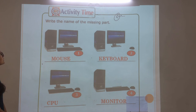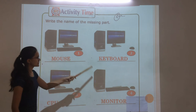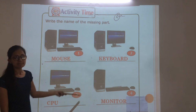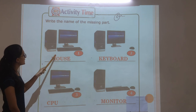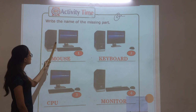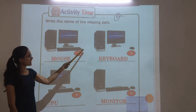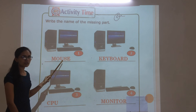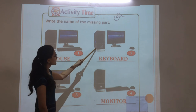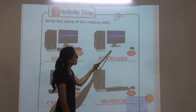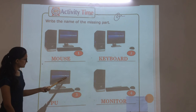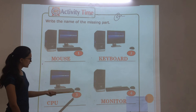Activity time — I will write the name of the missing part. You are given four pictures, each with one computer part missing. In the first picture, CPU, monitor, and keyboard are shown — the mouse is missing. In the second picture, the keyboard is missing. In the third picture, monitor, keyboard and mouse are shown — the CPU is missing.